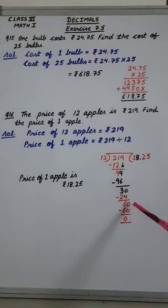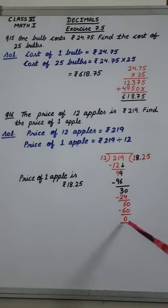12 twos are 24. Remainder is 6 and again we have to take a 0 and 12 fives are 60. Now remainder is 0.